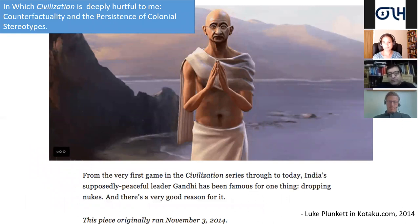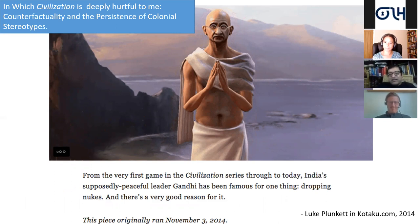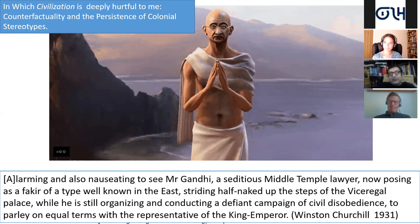There's another quick example: Gandhi in Civilization. He is one of the most violent characters, famous for dropping nukes. There was a glitch in the game, and that glitch was not corrected in later versions — it just became an element of fun. But it's also reflecting certain colonial responses to Gandhi, like Winston Churchill's. It's as if Gandhi, this figure, has to be undercut in certain ways in the discourses of this game — another empire-building game called Civilization.